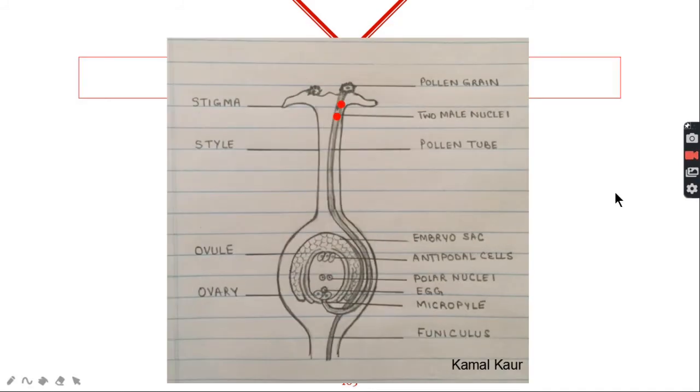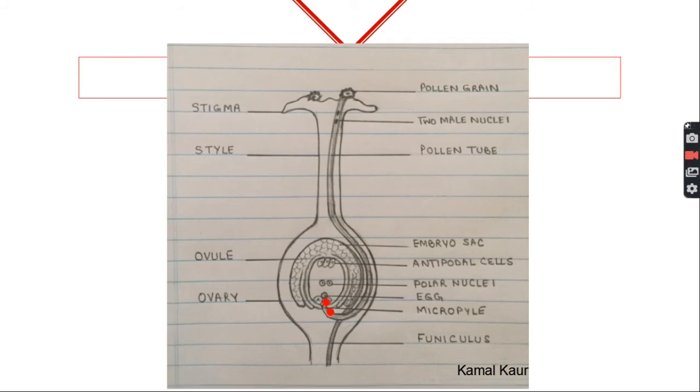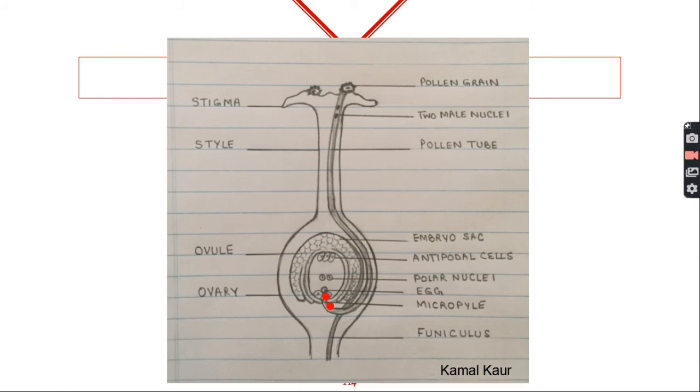Now we come to the two male nuclei that enter the pollen tube. These male nuclei start moving towards the embryo sac or the ovule. Both the nuclei are haploid in nature that is they have half the number of chromosomes or they have just one set of chromosomes. One male nucleus enters through the micropyle and it goes and fuses with the egg to form a zygote. So first fertilization occurs here.